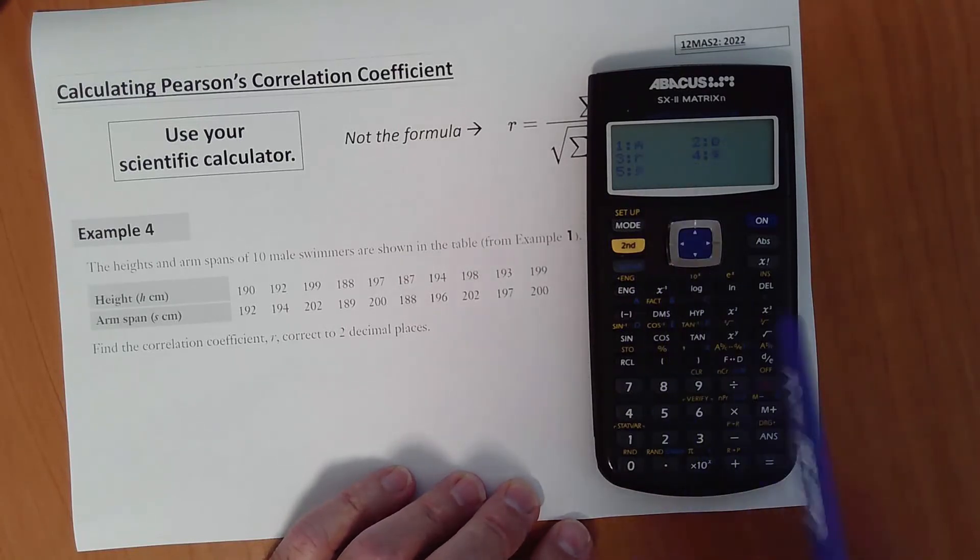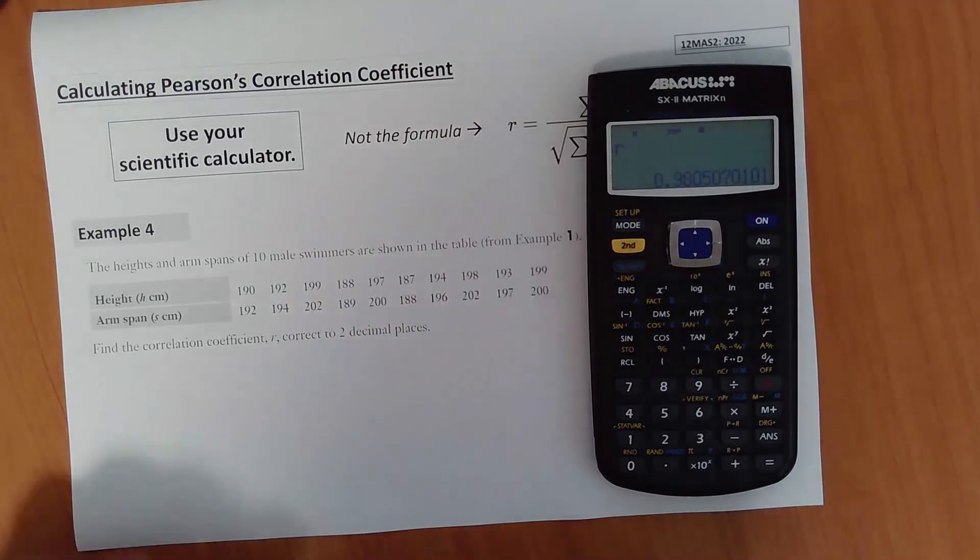Then, Pearson's correlation coefficient, number 3 R, equals 0.98 to two decimal places.